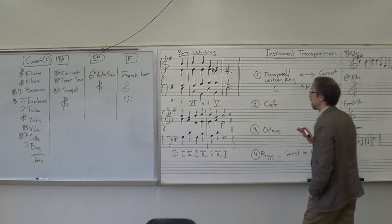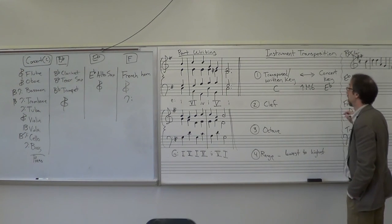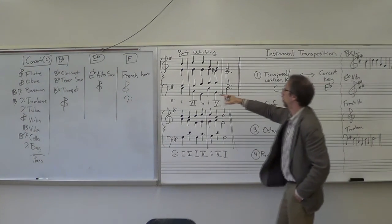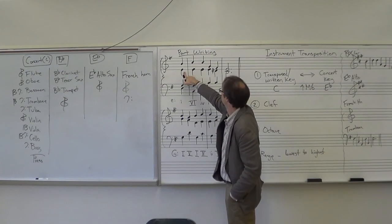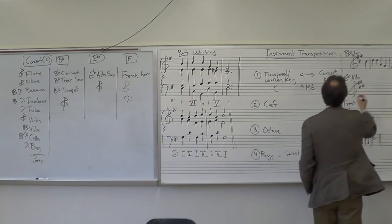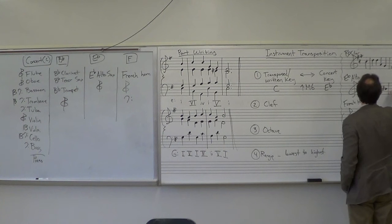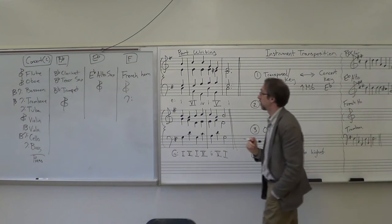Our alto saxophone, instead of being in E minor, it's going to be in C-sharp minor. So we're going, this is scale degree one, so scale degree one, one, one, one, down to the leading tone, which is B-sharp, jumping down to the fifth of the key, scale degree. So that's how we would write it out for alto saxophone.